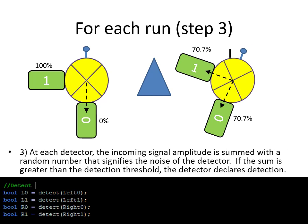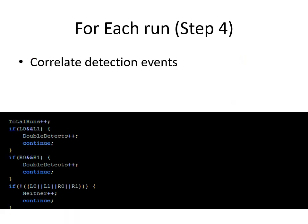Once we have the signal intensity going to each detector, we run it through a simple routine that does a random number detection. This gives us detection results for left-zero, left-one, right-zero, and right-one. Then in the last step, we go through and do all the correlations — we check whether we have a double detection on either side, whether we have no detection on either side, and so on.